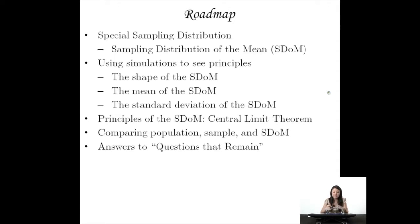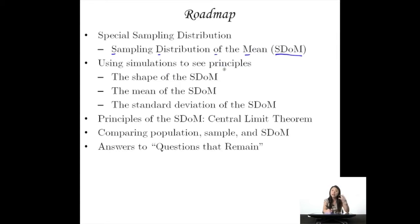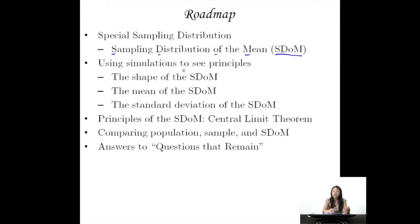I'm going to call it the STOM for short — sampling distribution of the mean — just so you'll know what I'm talking about without me having to say it every single time. We're going to use simulations online to see some principles and regularities that arise about the shape of the STOM, the mean of the STOM, as well as the standard deviation of the STOM. Shape, center, and spread really summarize the sampling distribution of the mean. Then we're also going to talk about how these principles connect to the central limit theorem.